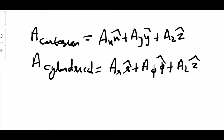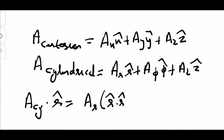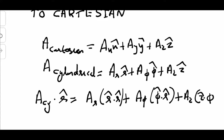What we can do is take the dot product of the cylindrical vector with respect to r̂. So A_cylindrical dot r̂ equals Ar times (r̂ · r̂) plus A-phi times (φ̂ · r̂) plus Az times (ẑ · r̂).